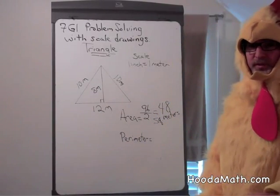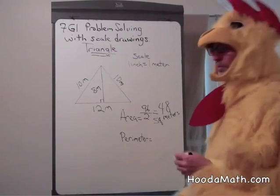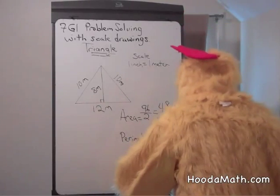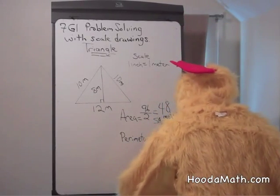The perimeter is the distance around the triangle, so we add the sides. 12 plus 10 plus 10, which is 32 meters.